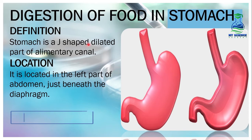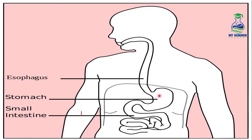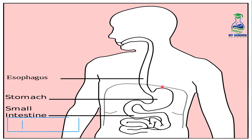The stomach is a J-shaped dilated part of the alimentary canal that is located in the left part of the abdomen, just beneath the diaphragm. The diaphragm is a muscular sheet of muscles and during breathing it helps the lungs in movement. The stomach is present beneath the diaphragm.